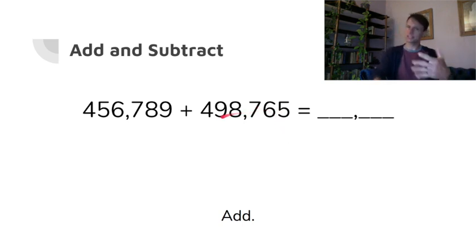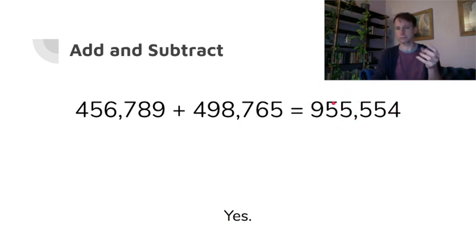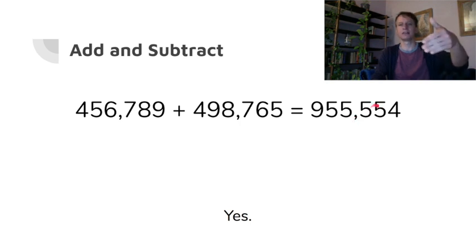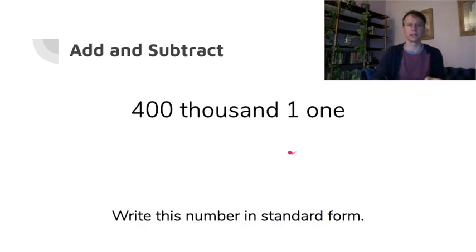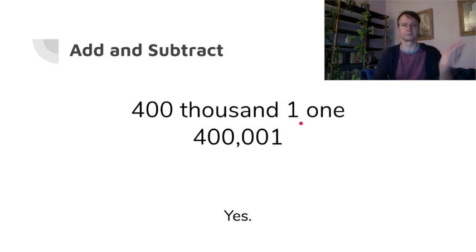Just saying these numbers is good practice. You should get — say with me — nine hundred fifty-five thousand five hundred fifty-four. If you ever have trouble saying these numbers, every time you see the comma, just read what's before it as a standalone number. For example, four hundred thousands and one — four hundred thousand. See? Four hundred, then say 'thousand' for the comma. One got it.